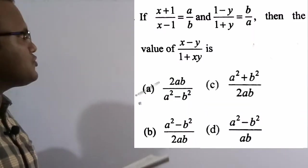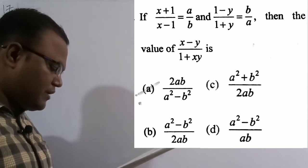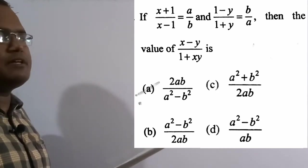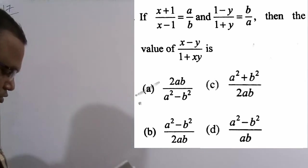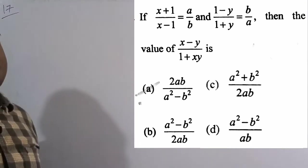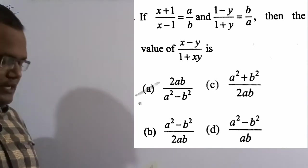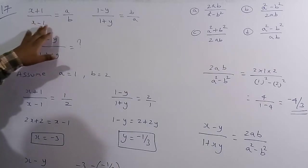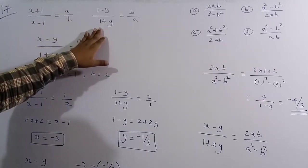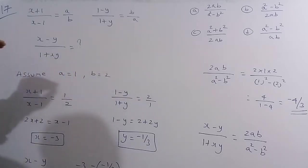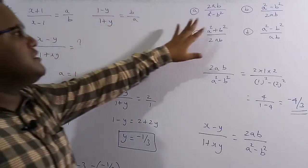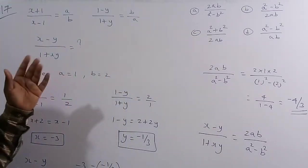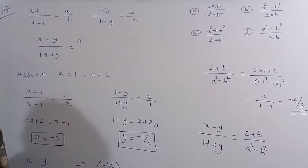Now solving the 17th question: if (x+1)/(x−1) = a/b and (1−y)/(1+y) = b/a, find the value of (x−y)/(1+xy). Option A, 2ab/(a²−b²), is the correct answer. To solve efficiently, assume a = 1 and b = 2.